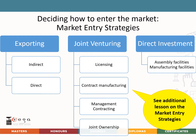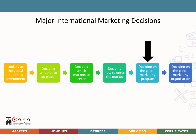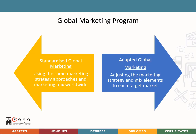You will be watching a separate lecture on market entry strategies specifically. Next, we look at deciding on the global marketing program. Companies operating in more than one foreign market must decide how much to adapt their marketing strategies and programs to local conditions. At one extreme is standardized global marketing — using the same marketing strategy and mix worldwide. At the other extreme is adapted global marketing, where the producer adjusts the strategy and mix for each targeted country, resulting in more costs but hopefully a larger market share.